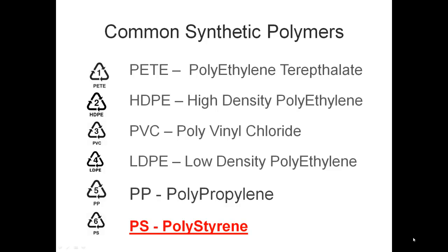The last polymer on our list is polystyrene. This polymer is one that is usually not recycled — it is considered a contaminant when added to the plastics recycling stream of the others. Typically you should not put this polymer, or anything made of this polymer, into your recycling bin unless your recycling company has told you that it's okay to do so.